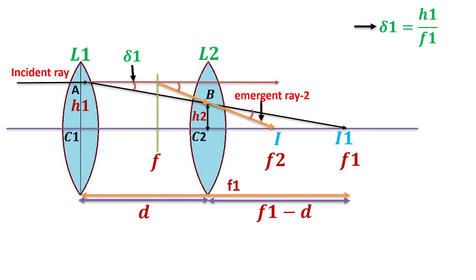Now another lens L2 is kept in the path of emergent ray 1. Then emergent ray 2 comes into existence, forming image I. The image formed due to lens L1 was I1 at focal length F1. Both lenses are separated by a certain distance D. Deviation delta1 produced due to lens L1 by refraction gives us H1 divided by F1.